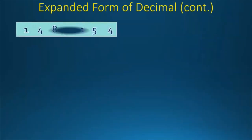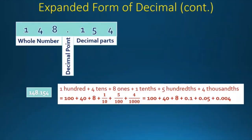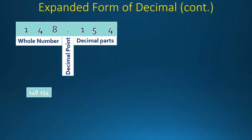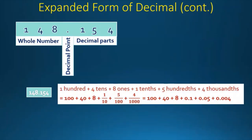So 148.154 is equal to 100 plus 4 tens plus 8 ones plus 1 tenth plus 5 hundredths plus 4 thousandths, which equals 100 plus 40 plus 8 plus 1 by 10 plus 5 by 100 plus 4 by 1000, which equals 100 plus 40 plus 8 plus 0.1 plus 0.05 plus 0.004.